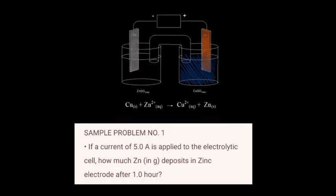Here's a sample problem. If a current of 5 amperes is applied to the electrolytic cell, how much zinc in grams deposits on the zinc electrode after 1 hour? We need to find the zinc in grams.